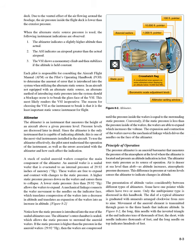Due to the Venturi effect of the air flowing around the fuselage, the air pressure inside the flight deck is lower than the exterior pressure. When the alternate static source pressure is used, the following instrument indications are observed: 1. The altimeter indicates a slightly higher altitude than actual. 2. The ASI indicates an airspeed greater than the actual airspeed. 3. The VSI shows a momentary climb and then stabilizes if the altitude is held constant. Each pilot is responsible for consulting the aircraft flight manual (AFM) or the pilot's operating handbook (POH) to determine the amount of error introduced into the system when utilizing the alternate static source.